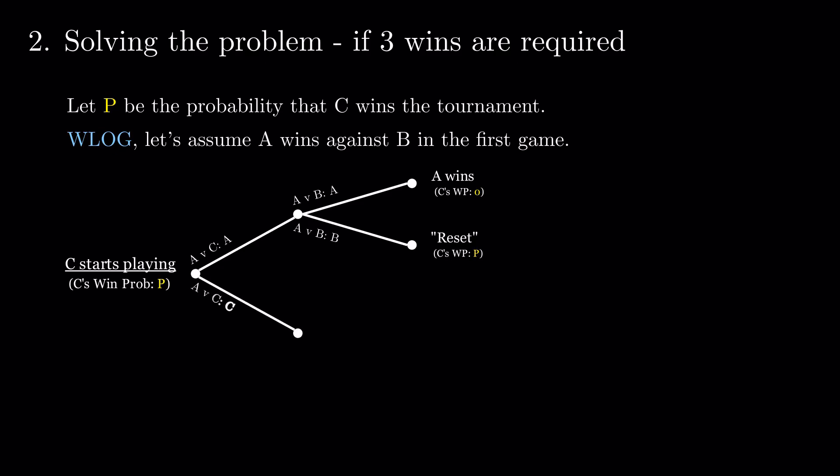If C wins his first game against A, but loses to B, we arrive at an alternative scenario in which C's winning probability is denoted by Q. This scenario can be characterized by a match between A and B, in which one of them has a win from before.